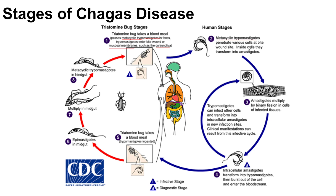Once the metacyclic trypomastigotes enter inside the cells, they transform into amastigotes. The amastigotes can multiply by binary fission in cells and infected tissues. These intracellular amastigotes can then transform back into trypomastigotes, which can burst out of the cell and enter the bloodstream, where they can infect other cells, transform again into amastigotes, and multiply in other tissues.